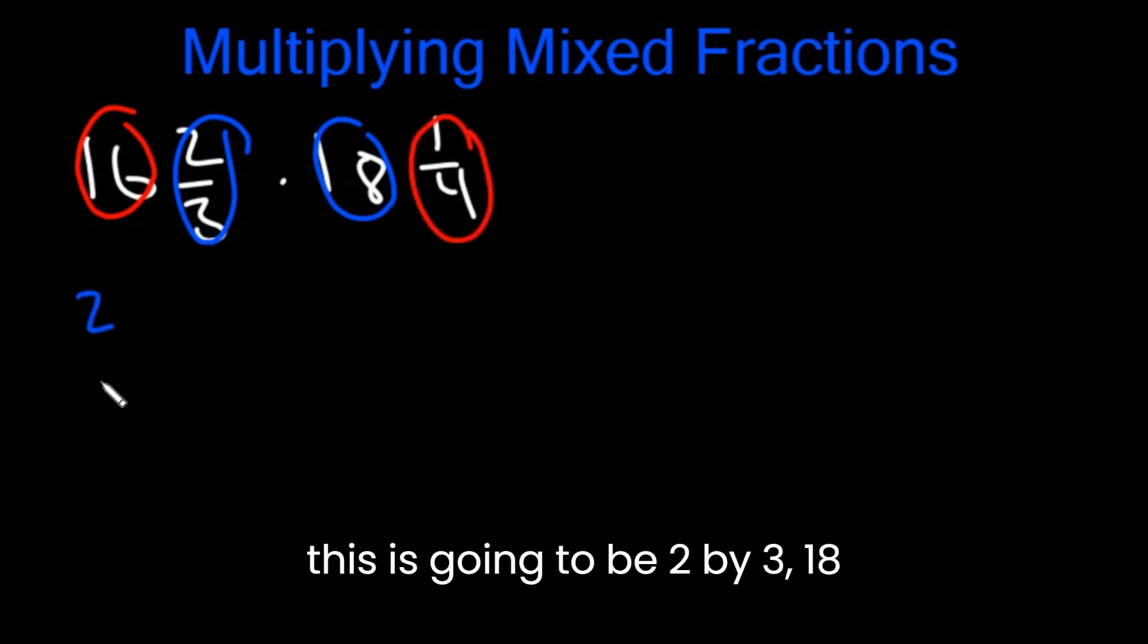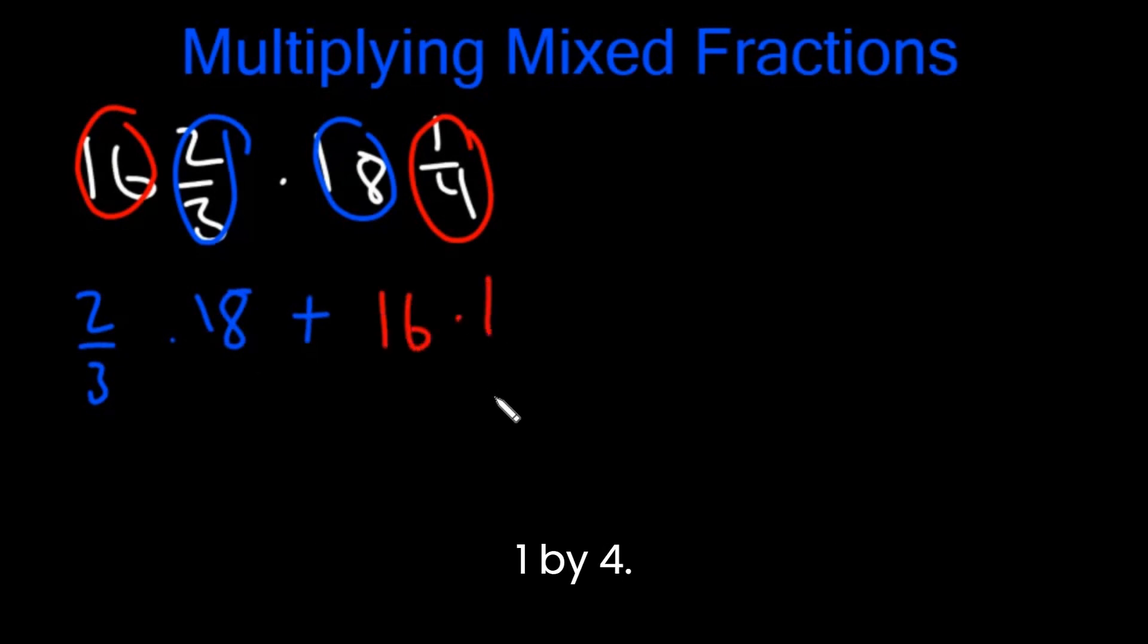So this is going to be 2/3, 18 plus 16, 1/4. So this is 6. 6 times 2 is 12 plus 4. That is 16.